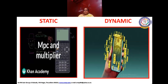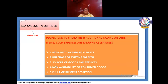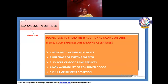Leakages of Multiplier. What do we mean by leakages? People tend to spend their additional income on other items; such expenditures are called leakages. There are 5 leakages: Number 1 — payments towards past debt; Number 2 — purchase of existing wealth; Number 3 — import of goods and services; Number 4 — non-availability of consumer goods; and Number 5 — full employment situation.